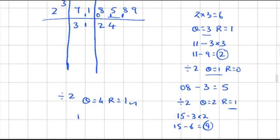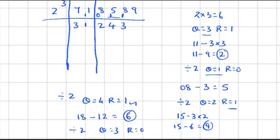Subtract 18 minus 3×4=12: 18 minus 12 gives 6. Now divide 6 by 2: 2×3=6, so quotient is 3 and remainder is 0. Carry that remainder 0 down next to the digit 9 in the remainder portion.